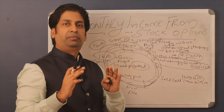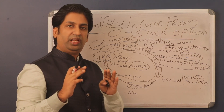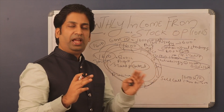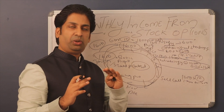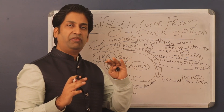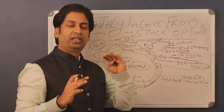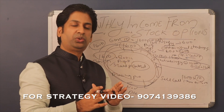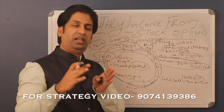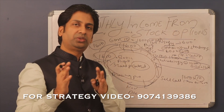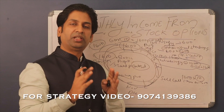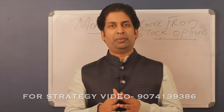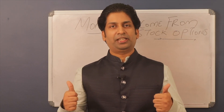These are the two ways to generate monthly income from stock options. In the Option Wheel Strategy, you need capital to take delivery of stocks. In the Covered Call strategy, you need to already hold the stocks and sell call options every month to generate monthly income. Thank you for watching this video — please subscribe to this channel.